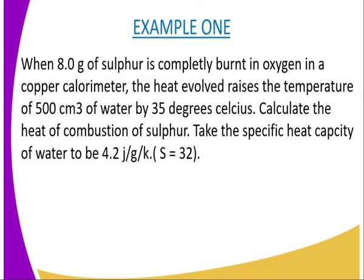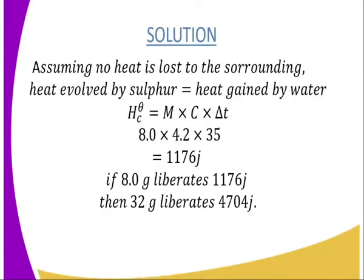For example: when 8.0 grams of sulfur is completely burned in oxygen in a copper calorimeter, the heat evolved raises the temperature of 500 cm³ of water by 35°C. Calculate the heat of combustion of sulfur. Take the specific heat capacity of water as 4.2 J/g/K. The relative atomic mass of sulfur is 32.